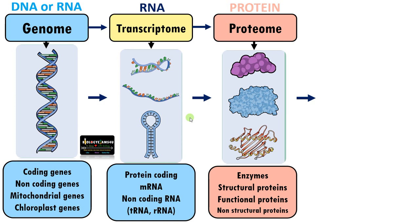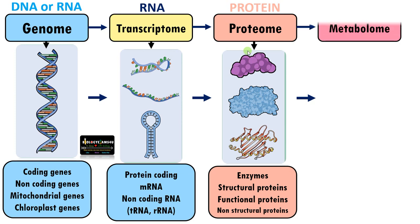To understand metabolomics better, we must know the flow of information in a biological system. It starts with the genome, which represents the complete genetic information within an organism, including mitochondrial and chloroplast genes. This information is transcribed to RNA to form the transcriptome, which is later translated to proteins. All the proteins present within a system form the proteome — we have a short video on this you can refer to for more.